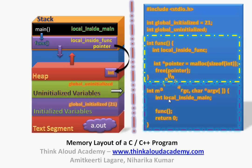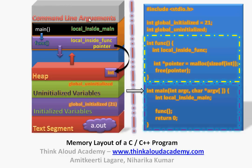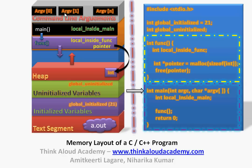There is one more interesting area: in main, you have two variables, int argc and argv. When you run a program, you send command line arguments and they get captured in argv. In your process, there is a special memory called the command line arguments memory which stores all the command line arguments. If you have n variables, all those variables — argv 0, 1, 2, 3 up to n — get stored in this command line arguments section.